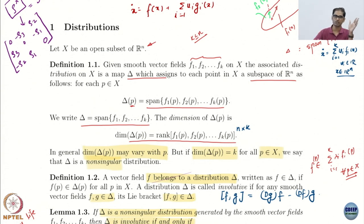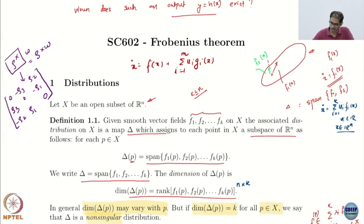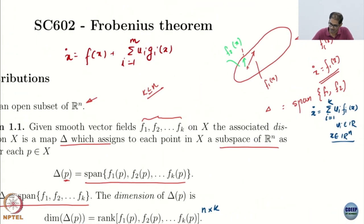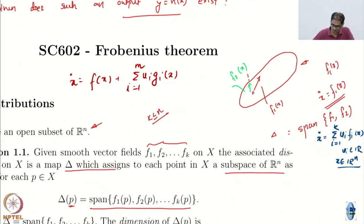We will only work with non-singular distributions. And why? What is the purpose of all this?